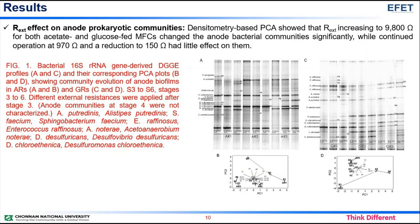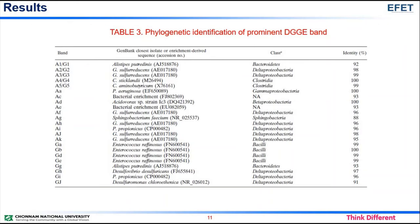External resistance effect on anode prokaryotic communities: Densitometry-based PCA showed that increasing external resistance to 9,800 ohms for both acetate and glucose-fed MFCs changed the anode bacterial community significantly. Continued operation at 970 ohms and a reduction to 150 ohms had little effect on them. Table 3 shows the phylogenetic identification of prominent denaturing gradient gel electrophoresis bands.